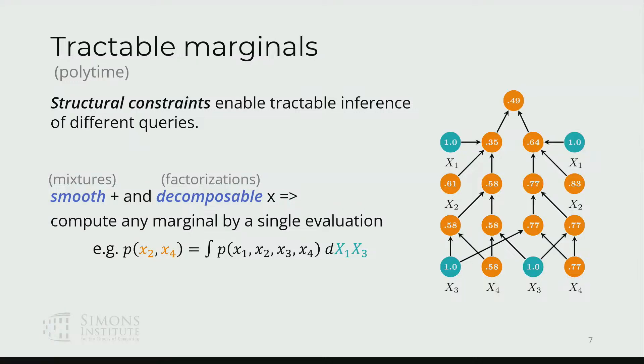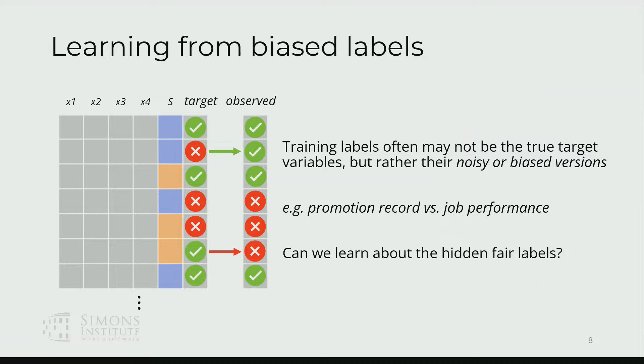We can compute some queries efficiently, and the idea is, depending on what queries you care about, we can define what circuit properties you need to actually compute that efficiently. To give an example in the fairness domain, the problem we considered here is: we are trying to learn a classifier, but the labels that we were given are not actually the true target that we want to predict. This might occur, for instance, if you're trying to make hiring decisions and want to predict someone's job performance.